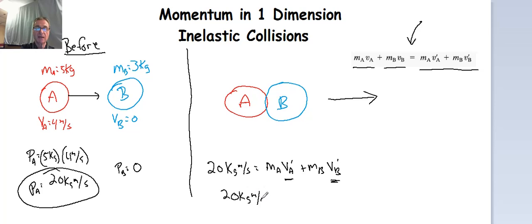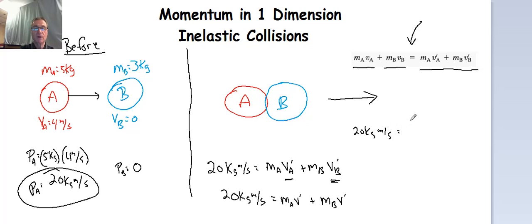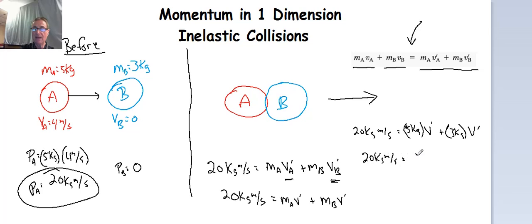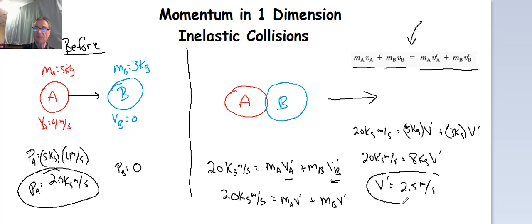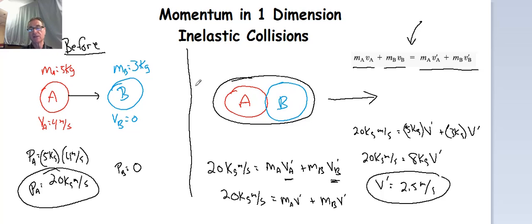So 20 kilogram meters per second is equal to M_A times V prime plus M_B times V prime. M_A is 5 kilograms and M_B is 3 kilograms times V prime. We can factor the masses out, and we get 20 kilogram meters per second is equal to 8 kilograms times V prime. Then V prime is equal to 20 kilogram meters per second divided by 8, and that's 2.5 meters per second. So the velocity of the blob after they collide is going to be 2.5 meters per second.